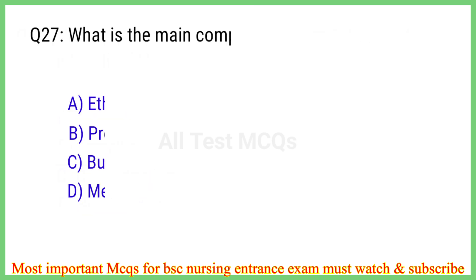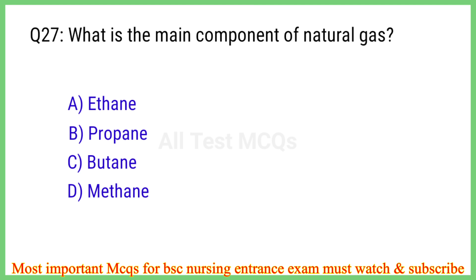Q27. What is the main component of natural gas? The right answer is option D: Methane.